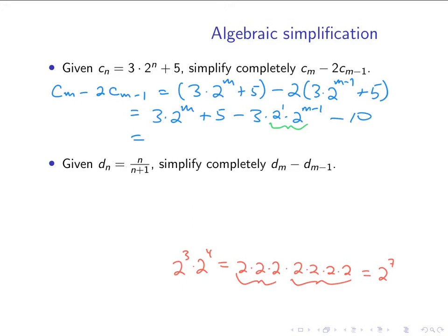So in this problem, the thing I've underlined in green there is 2 to the first times 2 to the m minus 1, so adding those exponents gives me 2 to the m. And now we can see that this part cancels, and I have left just the number negative 5.